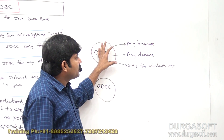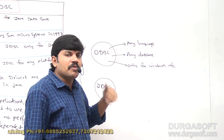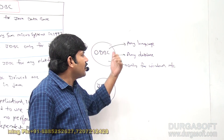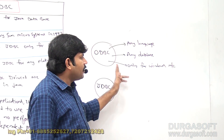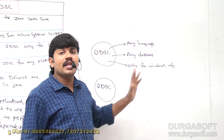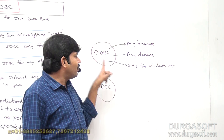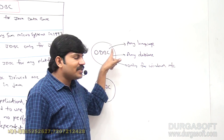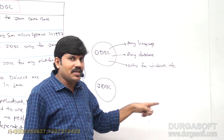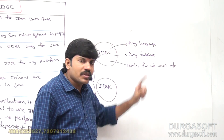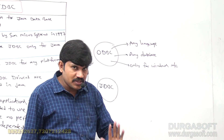So to summarize: ODBC is applicable for any language, for any database, but only for Windows machines. That is their business strategy — to promote their operating system.